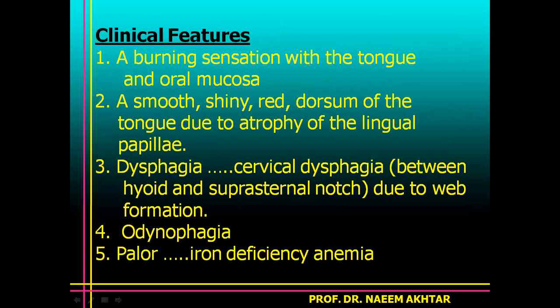Clinical features of Plummer-Vinson syndrome include: burning sensation of the tongue and oral mucosa; a smooth, shiny red dorsum of the tongue due to atrophy of the lingual papillae; dysphagia — typically cervical dysphagia between the hyoid bone and suprasternal notch due to web formation.